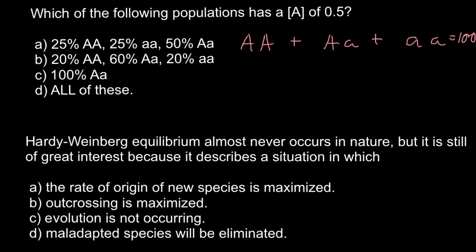We have only two types of alleles: the dominant allele and the recessive allele. So even though we have three genotypes, we only have two alleles that make these three genotypes. Now let's start with answer A.